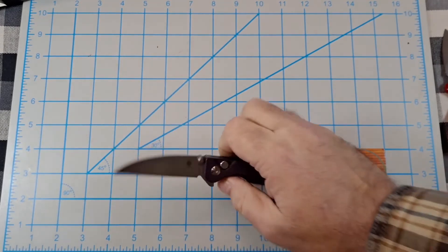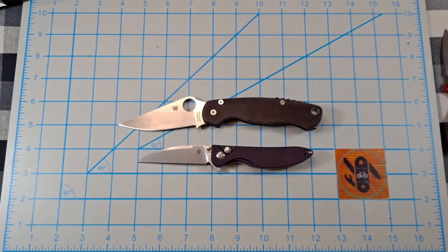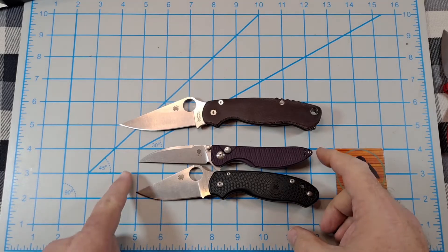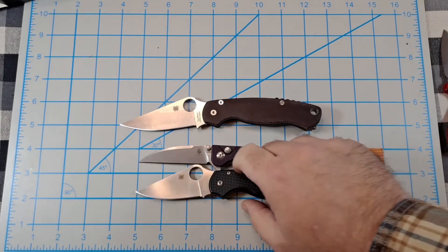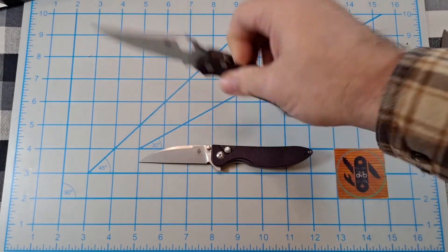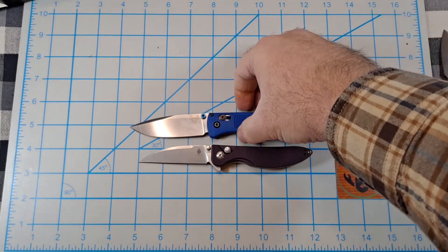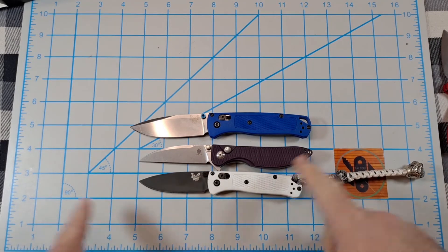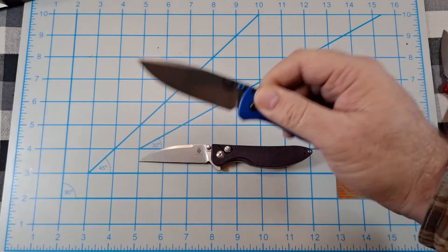Let's do some size comparisons. Let's do the standards. Paramilitary 2, Para 3 lightweight. You can see it's overall a little shorter than the Para 3, but blade length about the same. You definitely get more cutting edge on the swayback. Let's do Benchmade Bugout. It's a little smaller than the full size Bugout. Let's do the mini Bugout. It's a little longer, handle's definitely longer, blade's a little bit longer. So it's right between the mini Bugout and the standard Bugout.